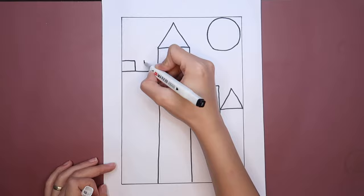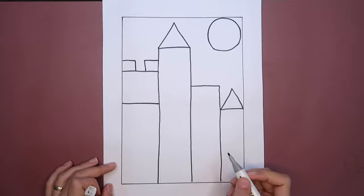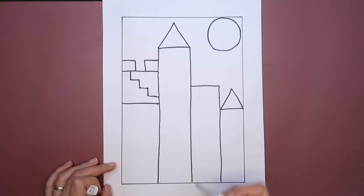Use lines to create shapes. Add basic shapes such as rectangles, circles, triangles, and squares. Continue to add more shapes for each house or building.